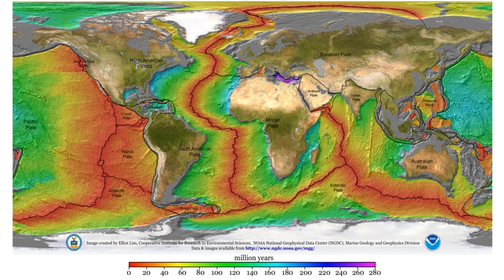In the core, Alfvén waves probably have little observable effect on the Earth's magnetic field, but slower waves such as magnetic Rossby waves may be one source of geomagnetic secular variation. Electromagnetic methods used for geophysical survey include transient electromagnetics, magnetotellurics, surface nuclear magnetic resonance and electromagnetic seabed logging.